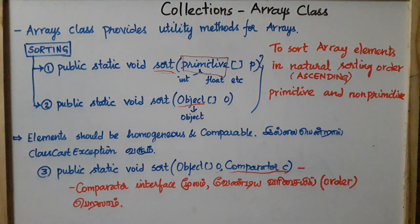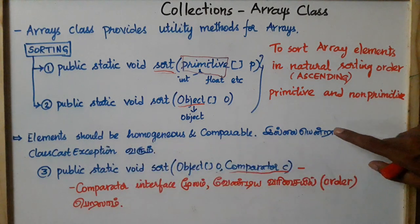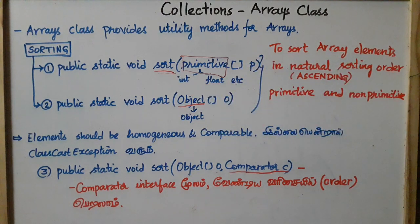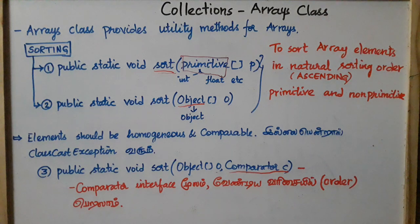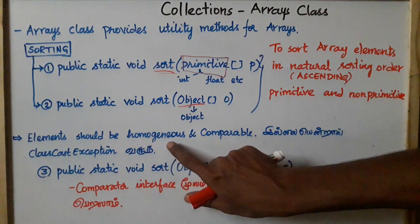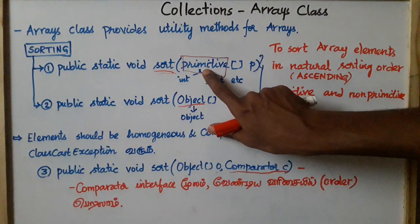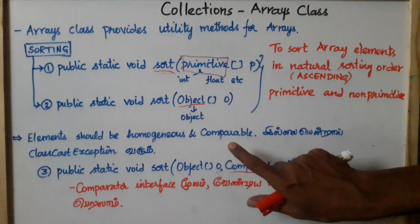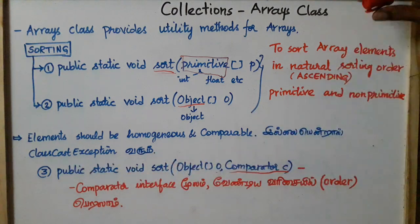The first important condition is that elements should be homogeneous and comparable. In the Arrays sort, we cannot compare an integer value with a character value — elements must be of the same type. The primitive data types should be homogeneous, and objects should also be homogeneous and comparable.